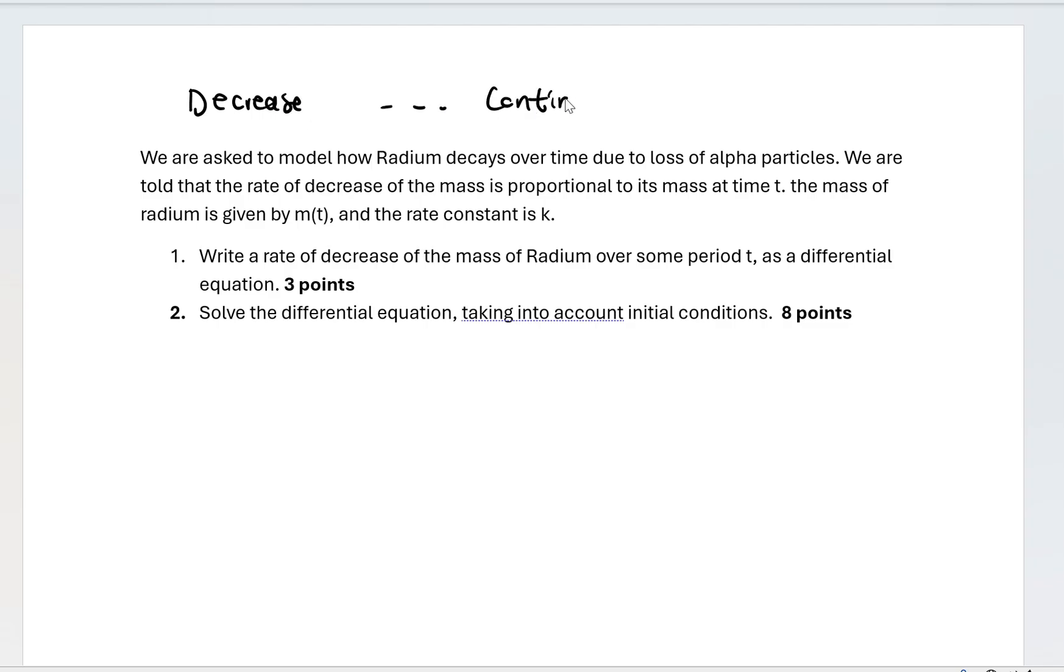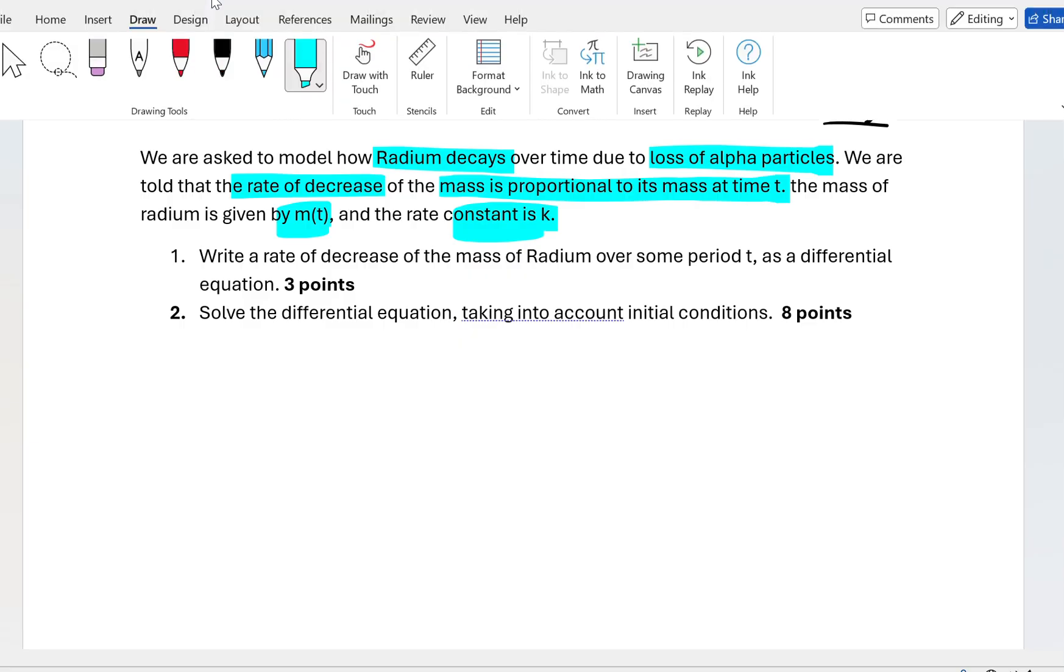This is still a continuous model problem because we are interested in some changes that will happen over time. We are asked to model how radium decays over time due to loss of alpha particles. We are told that the rate of decrease of mass is proportional to the mass at time t. The mass of radium is given by m(t), and the rate constant is k.